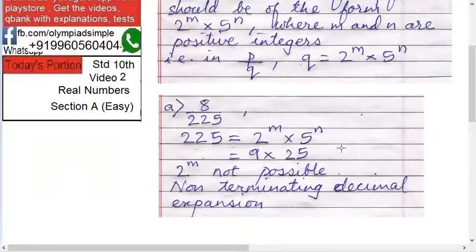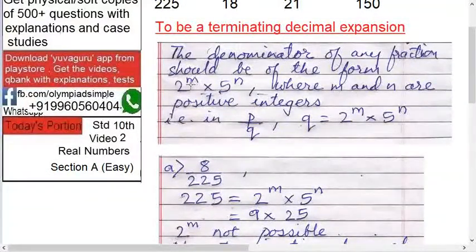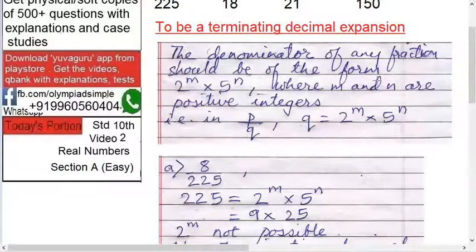Remember this, this is basic. The denominator should be of the form 2 raised to m times 5 raised to n, where m and n are positive integers.